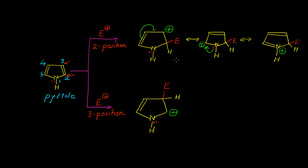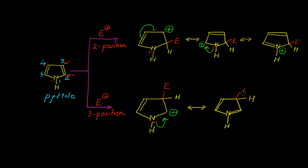In this case we have 3 resonating structures. Now let us write the resonating structures when we have electrophilic substitution at position 3. Here the positive charge is present on carbon number 2, and we get delocalization of this positive charge into the next resonating structure, showing a nitrogen-carbon double bond. The electrophile remains on position 3, and the positive charge comes onto the nitrogen.